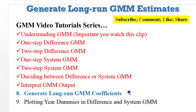Thank you for staying with me on Crunch Econometrics. This is the eighth video of our GMM video tutorials. In this video I'm going to show you how you can generate long run GMM coefficients only for the significant short run coefficients — that is, generate long run coefficients only for those coefficients that are significant in the short run.